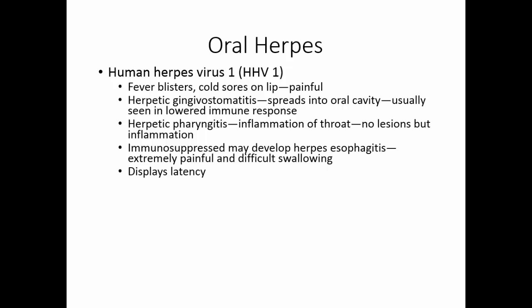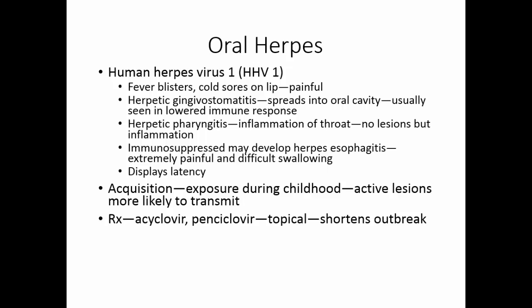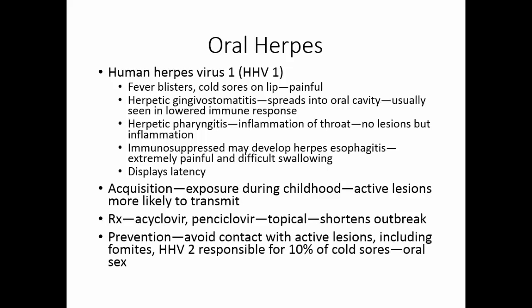The herpes virus displays latency, so once you have the virus, recurrences can occur. The virus is acquired during childhood, and there is some evidence that surviving puberty without oral herpes means you may never get it. Active lesions are much more likely to transmit the disease than latent infection. Treatment is with acyclovir or penciclovir, topical antivirals that shorten the outbreak. Prevention is avoiding contact with active lesions and fomites such as toothbrushes or shared drinks. While human herpesvirus type 2 typically causes genital herpes, about 10% of cold sores are caused by type 2, making oral sex another means of transmission.